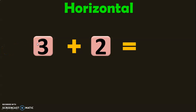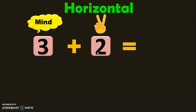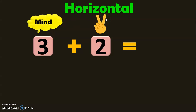In 3 plus 2, keep the number 3 in the mind and hold the number 2 in your fingers. Addition means always adding in the forward direction. We will have to add 3 plus 2: we have 3 in the mind and 2 in the fingers. So after 3, it will be 4, 5. So 3 plus 2 is equal to 5.